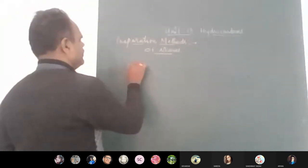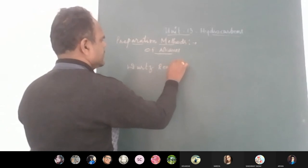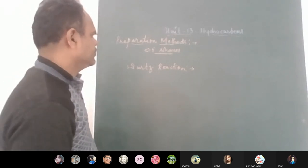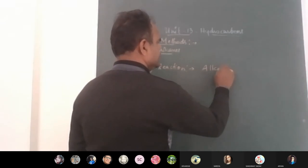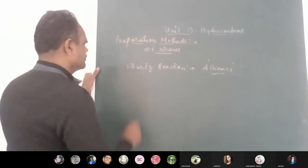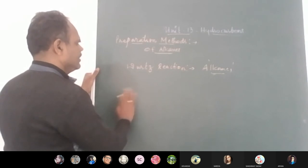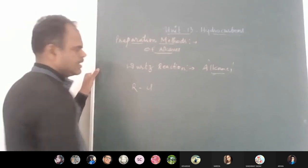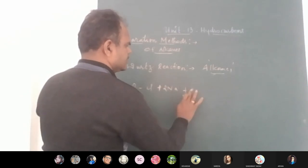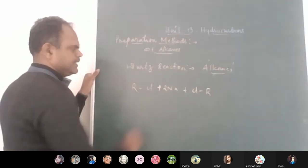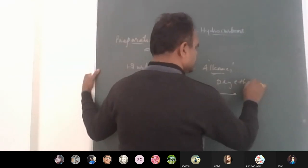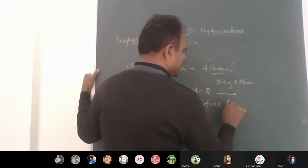The third method is the famous Wurtz reaction, used for preparation of alkanes. In Wurtz reaction we take two moles of alkyl halide (RCl) in the presence of sodium metal and dry ether. Dry ether must be free from water because we are dealing with sodium metal — if water is present, the reaction deviates and you cannot get the desired product. This reaction proceeds via a free radical mechanism.